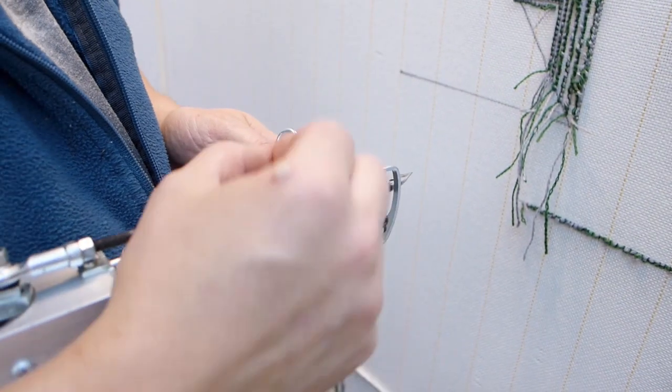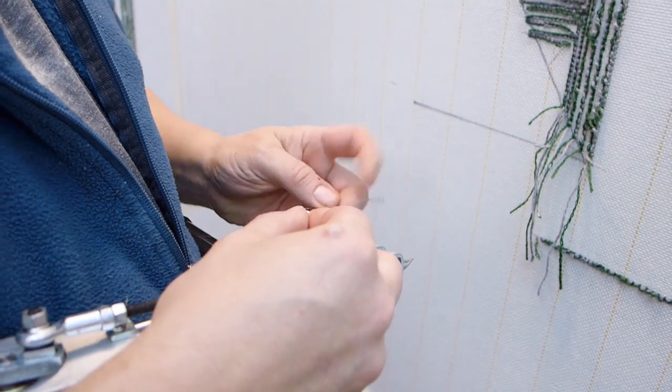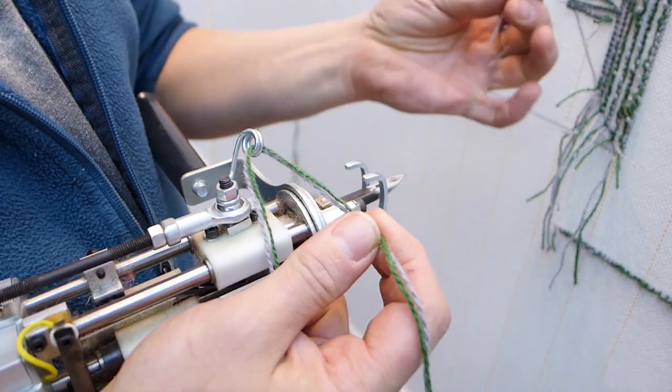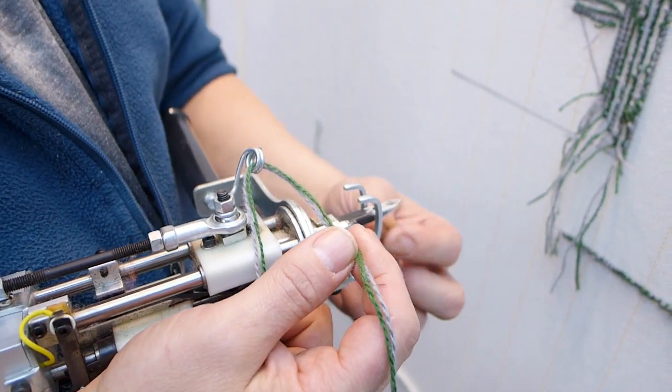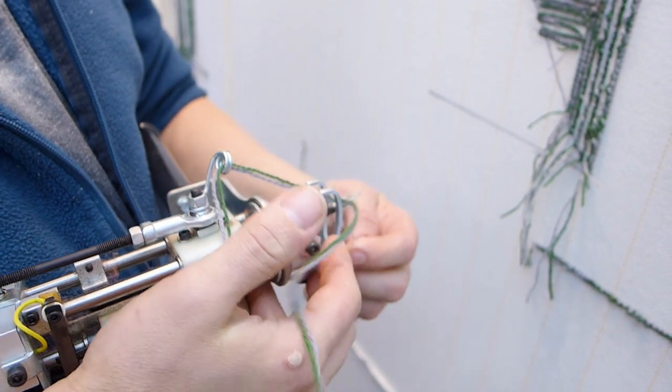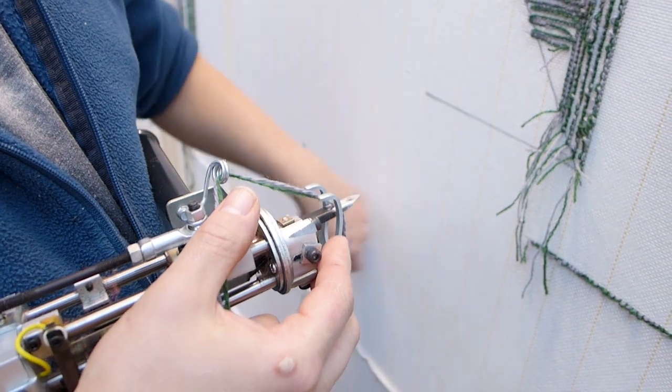The first step to threading this machine is to go through the loop part here. The second, you're going to need a bent paper clip or something similar, a bent piece of wire, and you're going to feed it through and then it goes just like that.